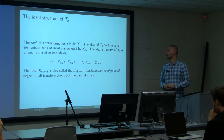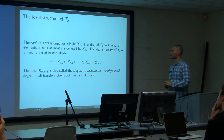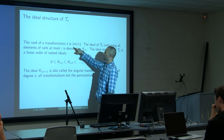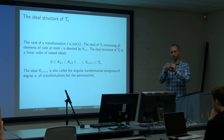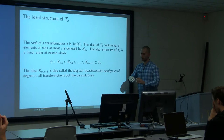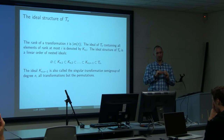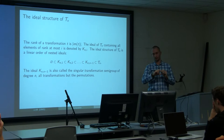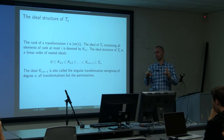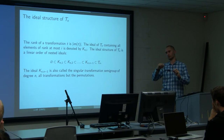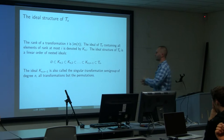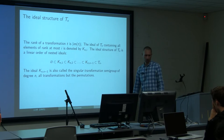We have this idea of using the ideal. What is the ideal structure of the full transformation semigroup? It's a relatively simple structure. All you have to do is consider the rank of the transformation, which is the size of the image set — that's why I said the image set would be a crucial property. The ideals are: transformations of rank one (image size one) being the smallest ideal, then all elements with image size two or one, then one, two, three, etc. That's the general ideal chain.